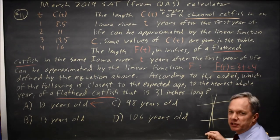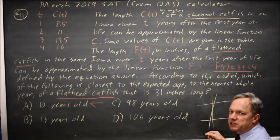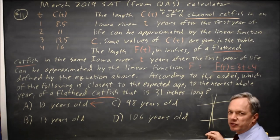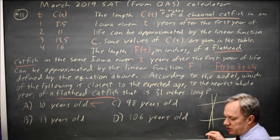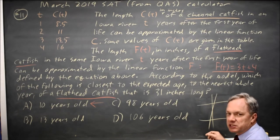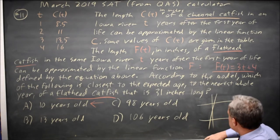So x is my t value, which again is years after the first year of life. So the actual age of the fish when x is 9 would be 10, and that is the answer I chose by hand.